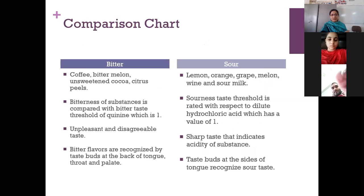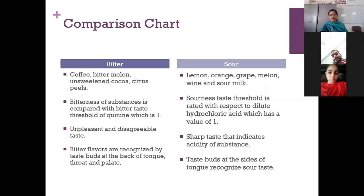This is a comparative chart between bitter and sour. Some food items you feel as bitter include coffee, bitter melon, unsweetened cocoa, and citrus peels — they have an unpleasant and disagreeable taste. For sour, items like lemon and orange have a sourness taste threshold which can be rated with respect to dilute hydrochloric acid, which has a value of one. The sharp taste indicates the acidity of the substance, and the taste buds for sour taste lie on the sides of the tongue.